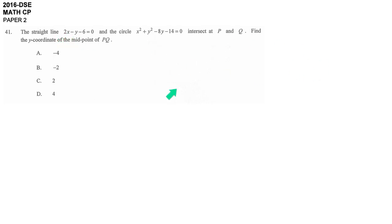In this question, they don't provide you any graph, so you just roughly draw one by yourself. There is a line, which is a straight line like this, and then also a circle. They intercept at two points, P and Q.